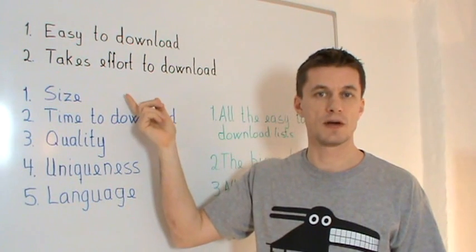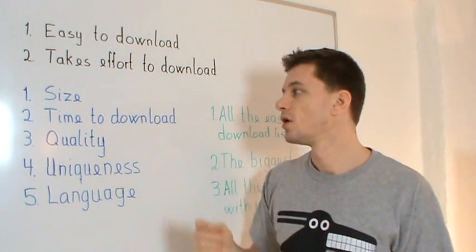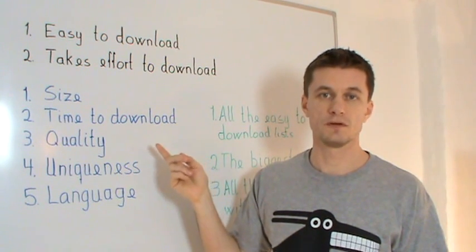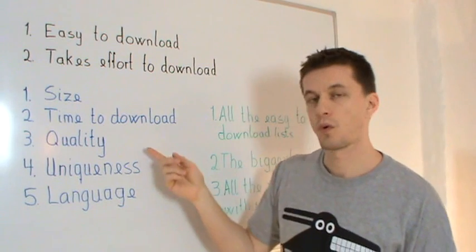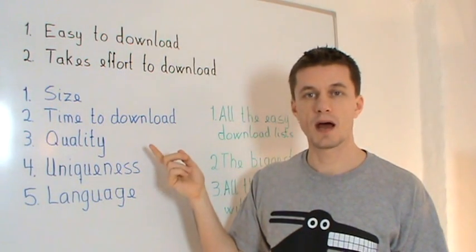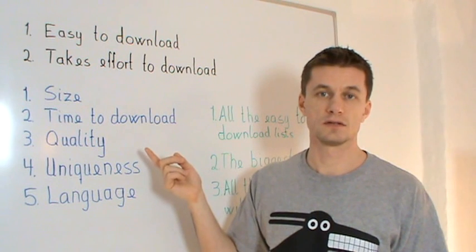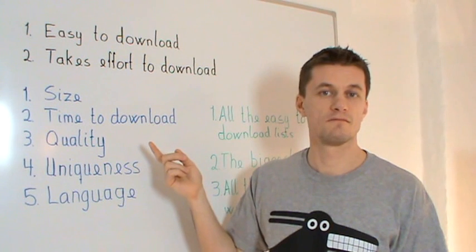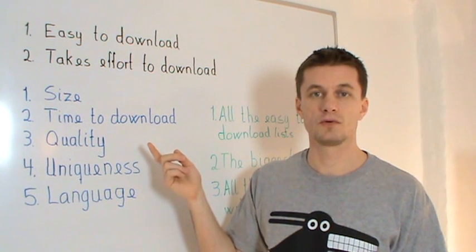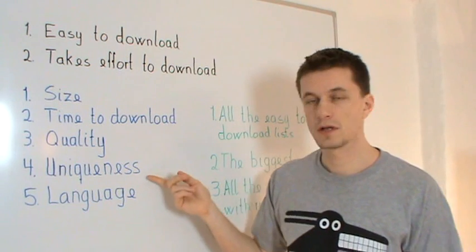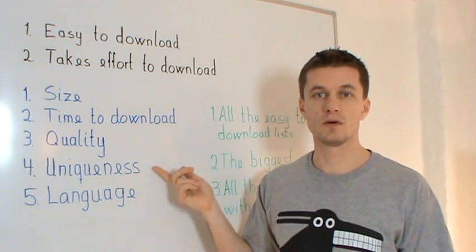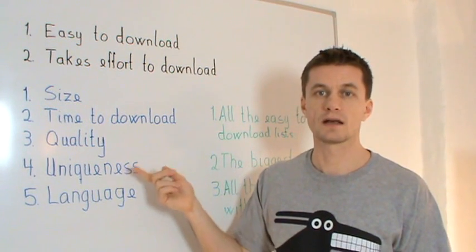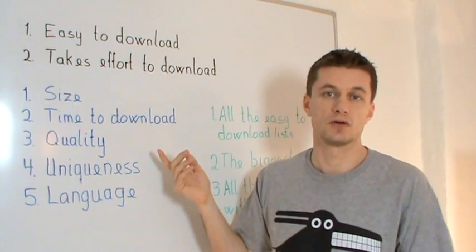First is size — size matters, you want as many keywords as possible. Second, time to download — there's a big difference between five minutes and five hours. Third, quality — if the quality impression is bad and it looks like a list that took an hour to make, it's probably stolen from somewhere else and will have more or less the same keywords. Fourth, uniqueness — you want to look if this keyword list looks unique, if it's a special niche so you could add keywords to your list that your list doesn't have already.